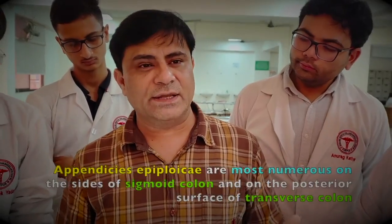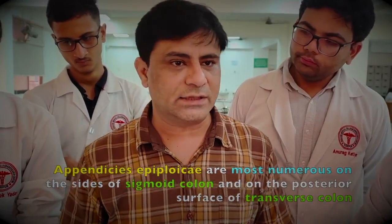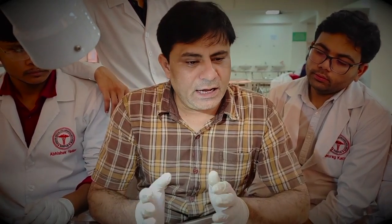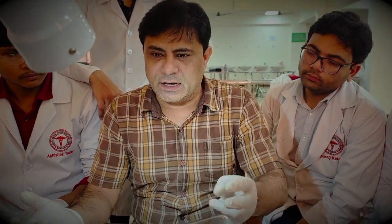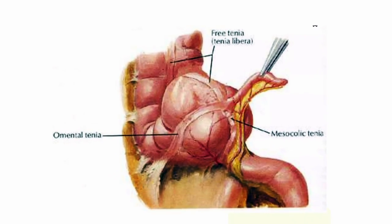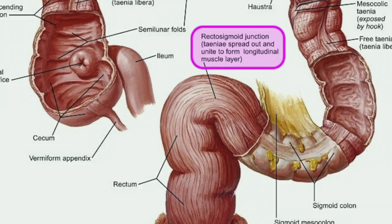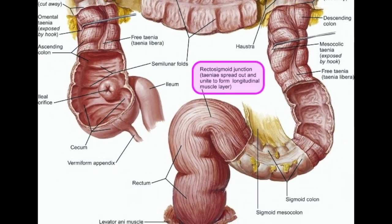The appendices epiploicae of the transverse colon and sigmoid colon are more visible. The proximal ends of the three tinea are actually converging towards the appendix. The terminal portions of these three tinea coli diminish, or become diffused, over the sigmoid colon. And the tinea is not seen in the rectum.